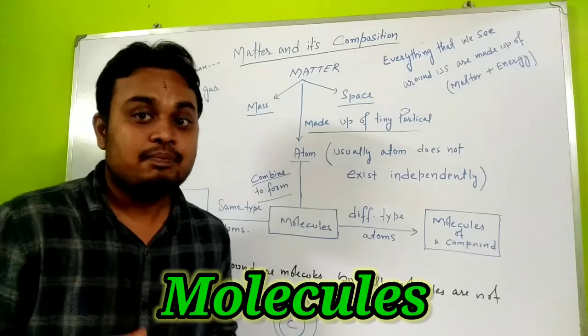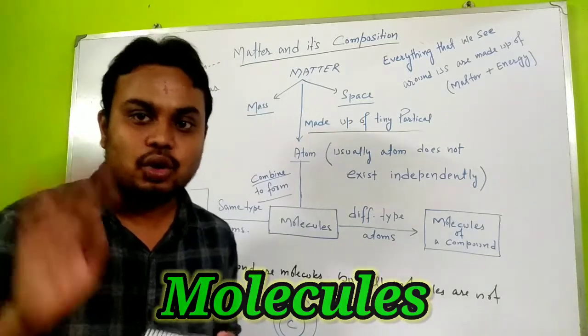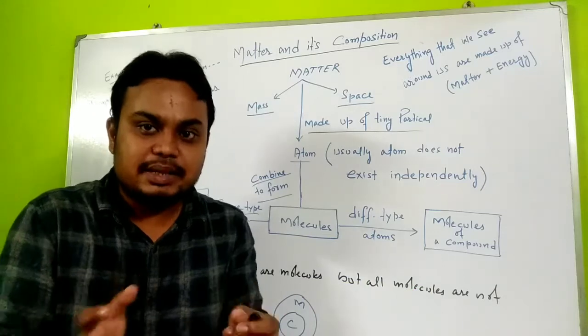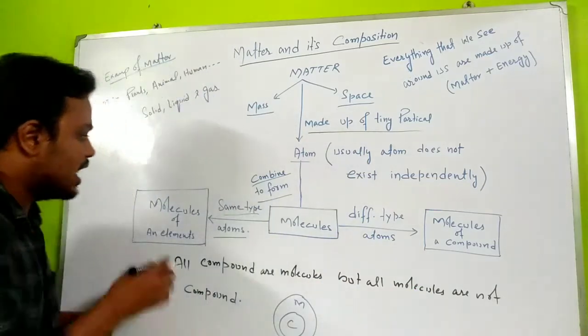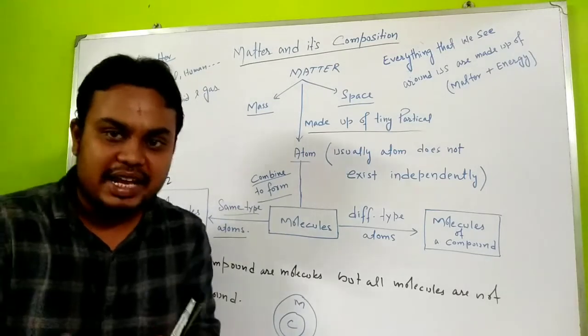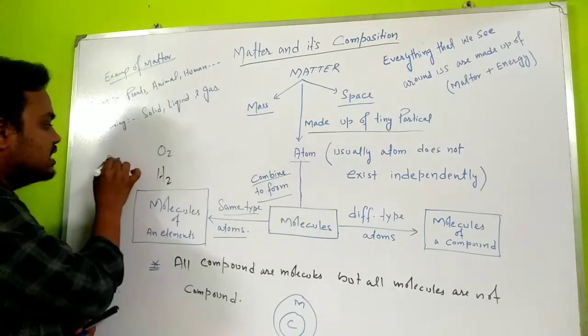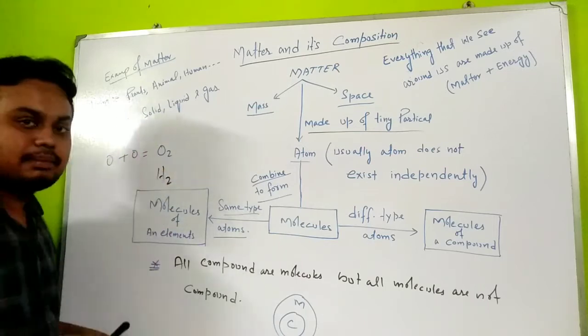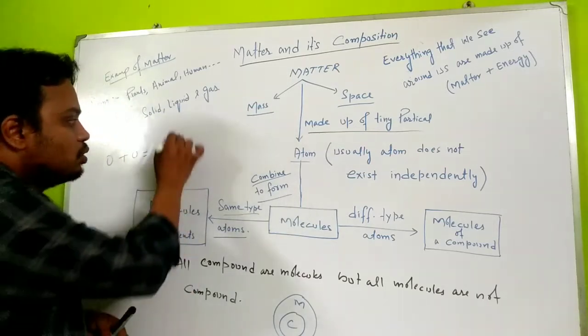Once molecules are formed, there are two types. If atoms combine with similar type of atoms - for example, hydrogen becomes H2. When hydrogen forms, one hydrogen atom combines with another hydrogen atom. Similarly, one oxygen atom combines with another oxygen atom to form O2.